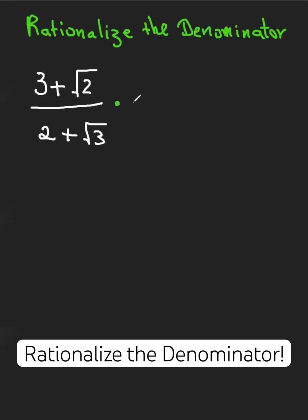So rationalize the denominator. We need to multiply by the bottom, which is 2 plus root 3, but we change the sign to 2 minus root 3, and whatever we do to the bottom, we do to the top. So the conjugate, we call that the conjugate, so the conjugate of 2 plus root 3 is 2 minus root 3.